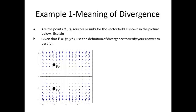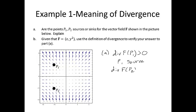For the first example, Part A asks: are the points P1 and P2 sources or sinks for the vector field F shown in the picture? The divergence of F at point P1 — it looks like the vectors going in are smaller than the vectors coming out, so the net rate of outflow is positive, meaning the divergence of F at P1 is greater than zero, and P1 is a source. For P2, the vectors going in are bigger than the vectors coming out, so the net rate of outflow is less than zero, and P2 is a sink.